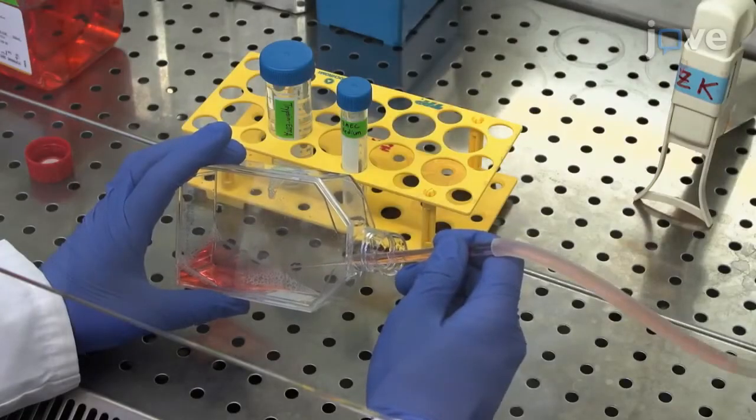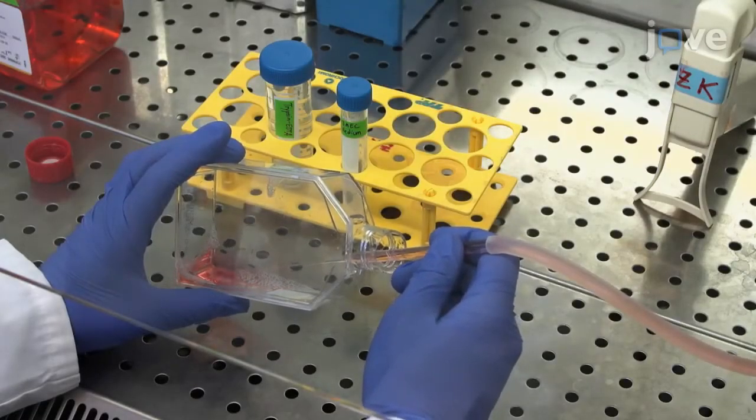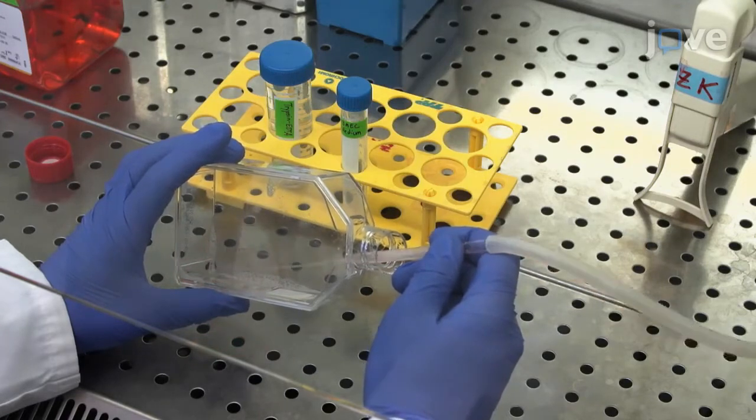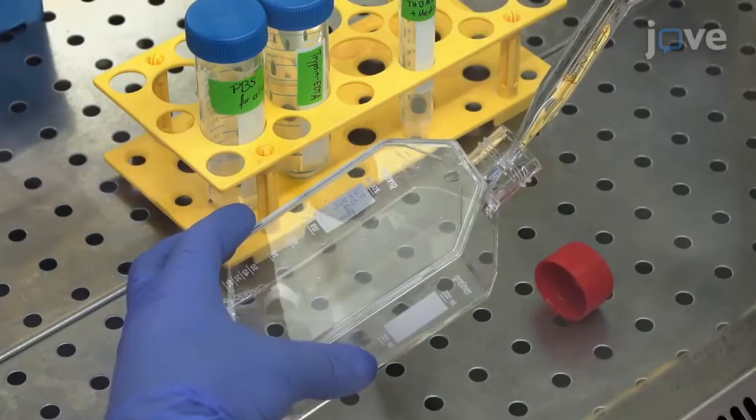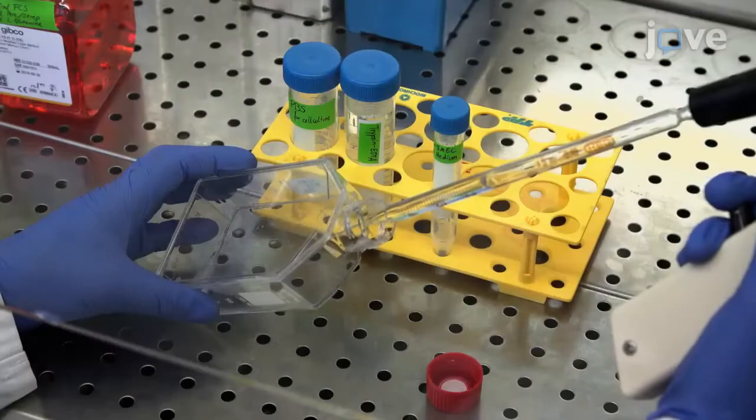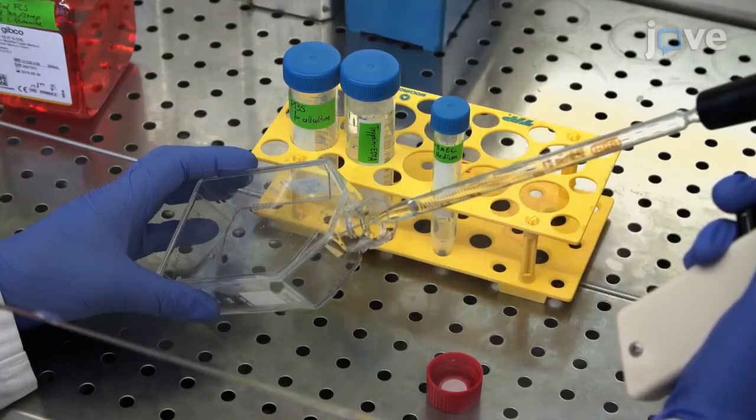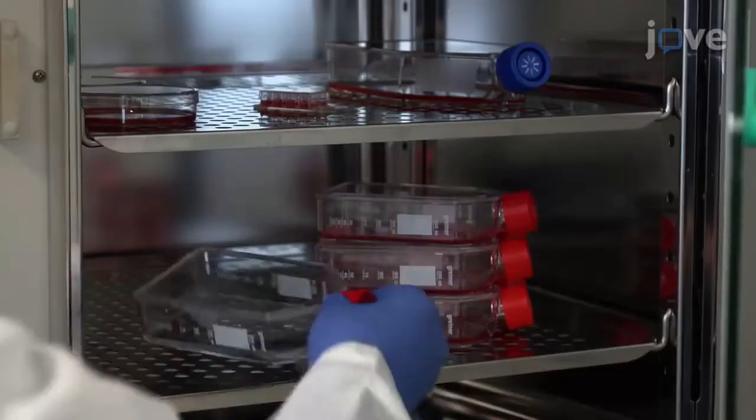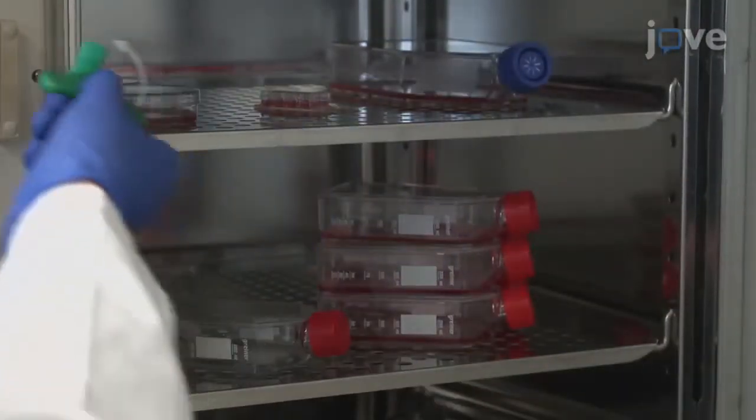To seed the human microvascular endothelial cells, aspirate the medium from the cell culture flask and wash the cells with 10 milliliters of PBS. Cover the cells completely with 5 milliliters of trypsin EDTA and incubate the flask for 3 to 5 minutes at 37 degrees Celsius.